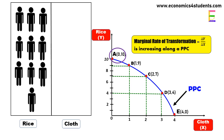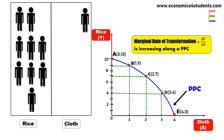Now, to increase the production of cloth by one unit, we shift one laborer from rice production to cloth production. The economy moves to point B on the PPC, producing one unit of cloth and nine units of rice, due to reallocation of resources.